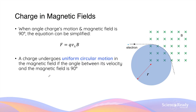A very important concept to understand when it comes to the motion of a charged particle in a magnetic field is that when the angle between the charge's velocity and the magnetic field line is perpendicular or 90 degrees, the charged particle actually undergoes uniform circular motion. This is because the magnetic force acting on the charged particle provides the centripetal force required to maintain the uniform circular motion. When a charged particle such as an electron enters the magnetic field that is going into the page, you can use the right-hand-palm rule to determine that the magnetic force acts downwards.